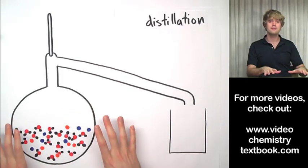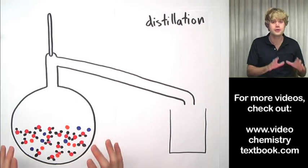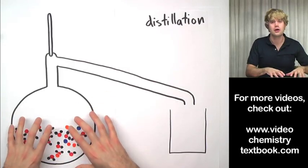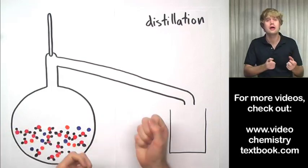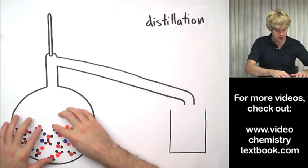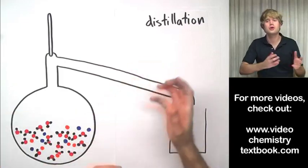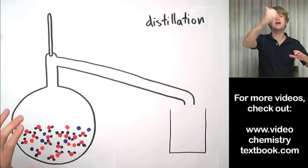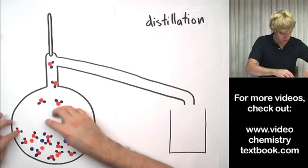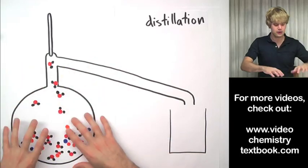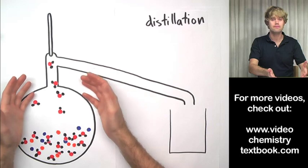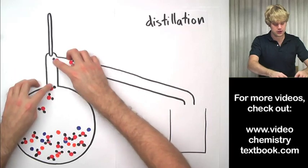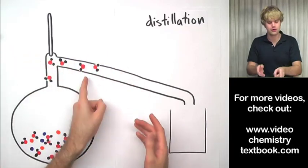Here's how we do distillation. The first thing I want to do is heat up this flask, so underneath it I'll put a Bunsen burner or a hot plate — something that's going to heat it up. As it heats up, the kinetic energy of the atoms and molecules in the mixture is going to increase and they're going to start moving around. Eventually, these water molecules will be moving fast enough that they can pull away from the other atoms and molecules in the solution and become a gas. A whole bunch of water molecules come out as the mixture starts to boil, making steam. This steam rises up into the top of the flask and then starts going through the tube.